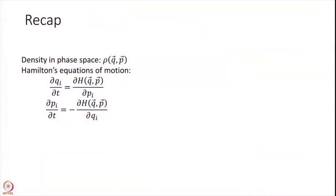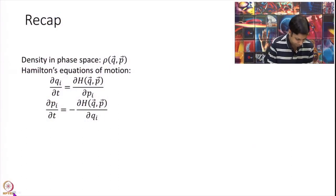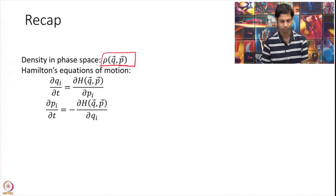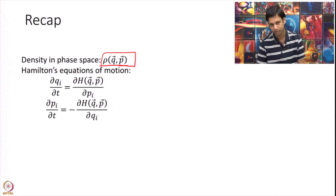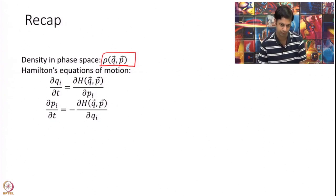Just a quick recap. In the last module, we looked at the density in phase space, rho of q, p. This density is the density of finding the system at the given point in space, which is q, p. And again q, p represents the phase space.